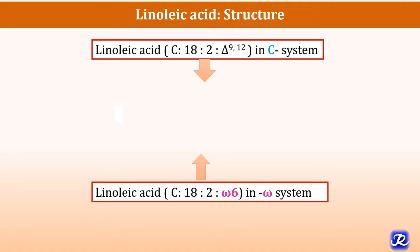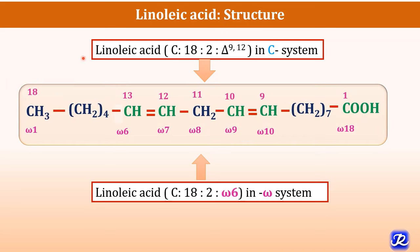Linoleic acid is the first essential fatty acid. In the C system it is denoted as C18:2, delta 9,12 — 18 carbon atoms, two double bonds, with the first between carbons 9 and 10, and the second between carbons 12 and 13. In the omega system, linoleic acid is shown as C18:2 omega-6, because the first double bond is between omega 6 and omega 7.